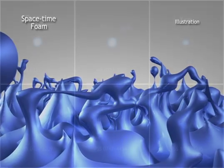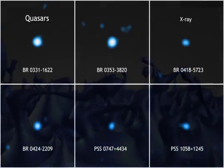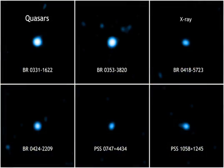By looking at the light from distant quasars, in X-rays from Chandra as well as gamma-ray telescopes, a team of scientists set out to test some of the models of space-time foam.